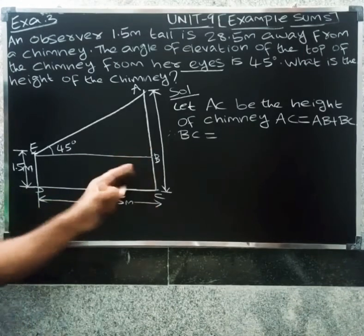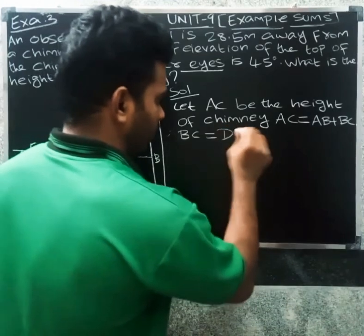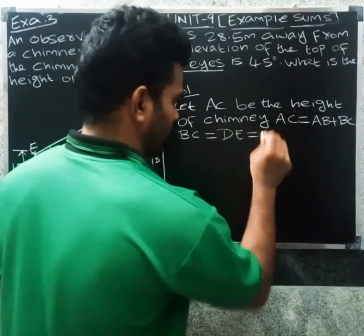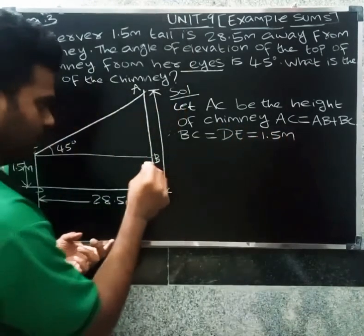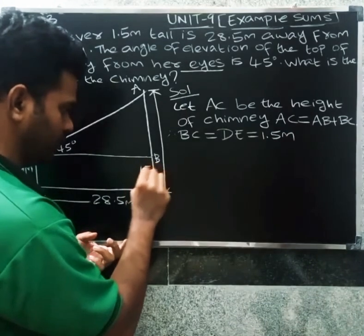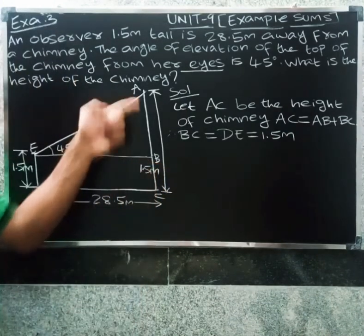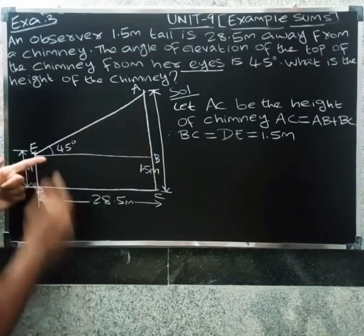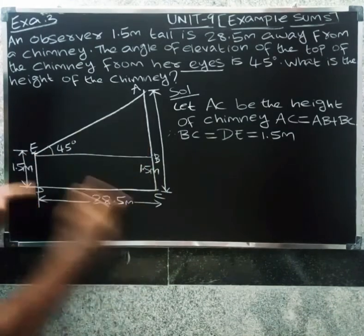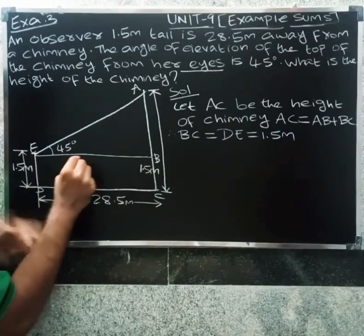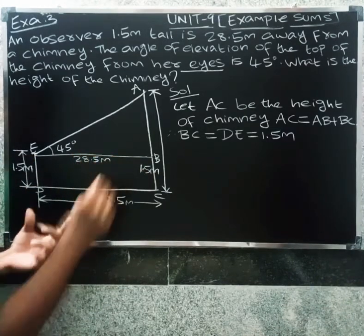So BC is 1.5 meter — that is the observer's height, and DE is 1.5 meter. CD equals BE, which is 28.5 meter — that is the horizontal distance from the observer to the chimney.